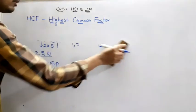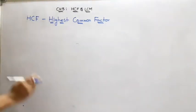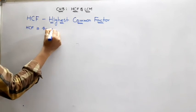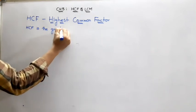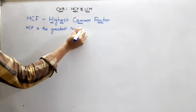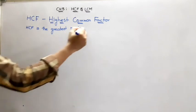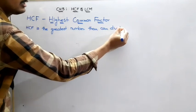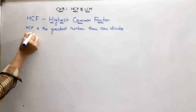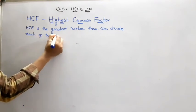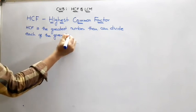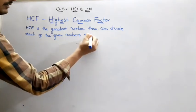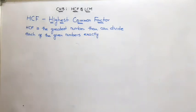What is the HCF definition? HCF is the greatest number that can divide each of the given numbers exactly. I will send a document, children — don't copy anything from the board. Each of the given numbers exactly — this is the definition of HCF.